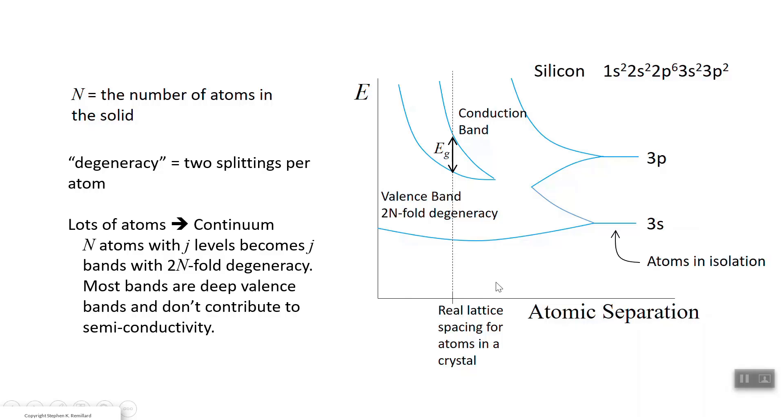Most bands are deep valence bands and don't contribute to semiconductivity. All of these energies down here are what you call deep valence. And there are actually more bands down here, because this is a 3s splitting off. And we haven't talked about the 2s and the 2p, but they're down here. And so you are forming more bands down here, but they are all valence. It's only way up here at the top that you have conduction.